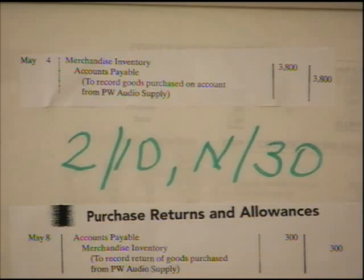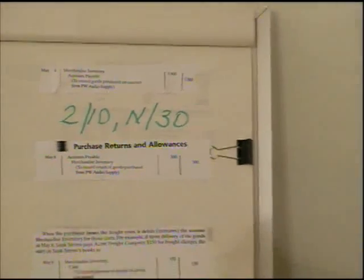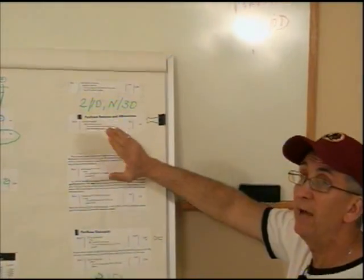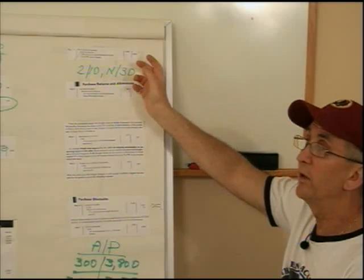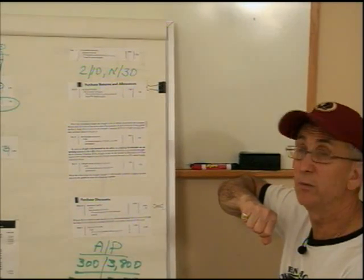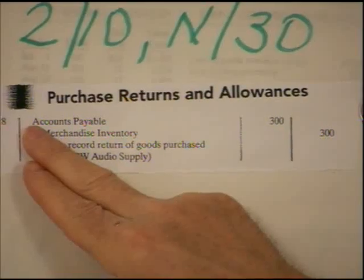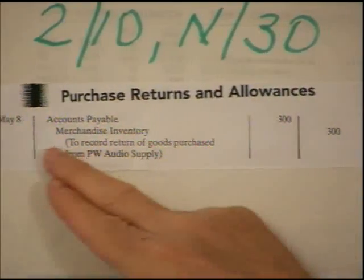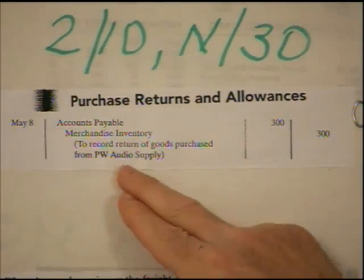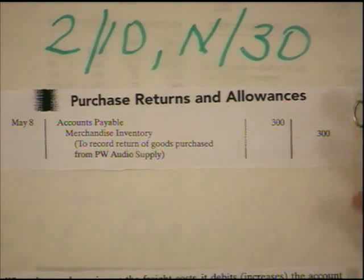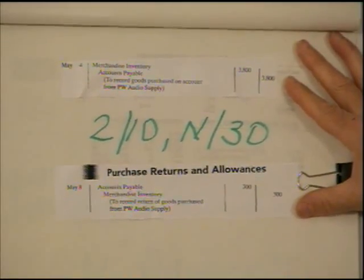In our example, the company decided to return $300 worth of goods. When they record the return, they simply take the same exact journal entry and reverse it for the $300 being returned. It's the same accounts but exactly opposite: we reduce our payables by $300, and we credit merchandise inventory for $300. As you look at these two entries, they're exactly the same but inverse because we're reversing out our purchases.